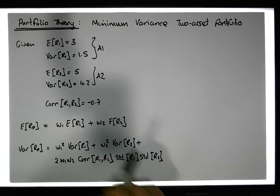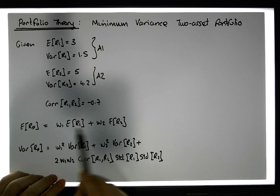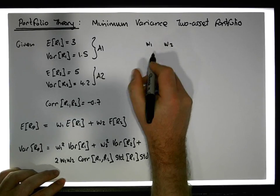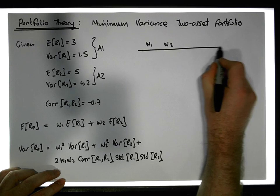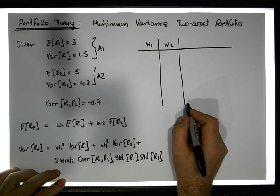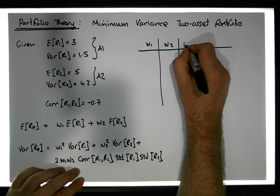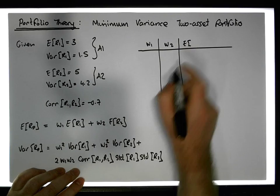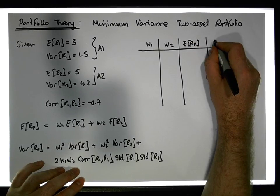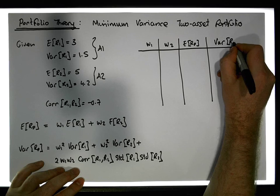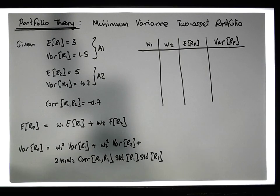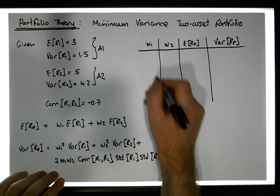To find the minimum variance portfolio, we start off with some possible weights for w1 and w2. From w1 and w2 we calculate the expected returns of the portfolio, and then we can calculate the variance of the returns of the portfolio. Let's start off with some incremental values for w1 and w2.